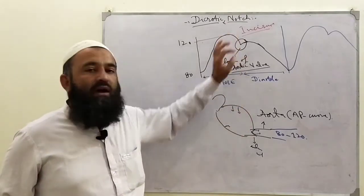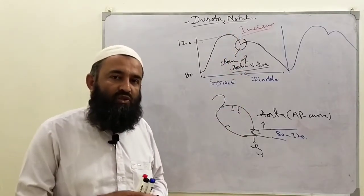So to review: today we have explained that the dichrotic notch, also called incisura, is due to closure of the aortic valve.